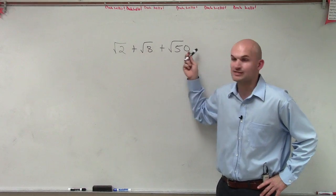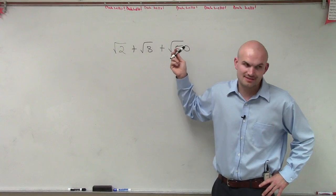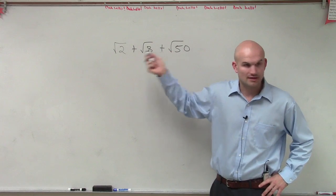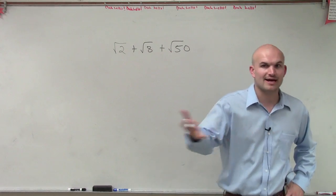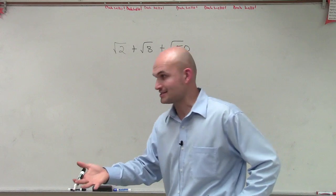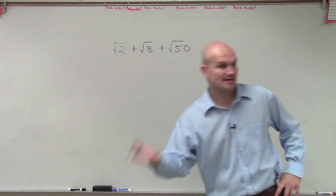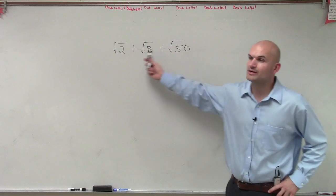So right now I have square root of 2, square root of 8, and square root of 50. I cannot add these. This does not equal the square root of 60. They have to be like terms, just like we add x's and y's. You can only add x's with x's, and y's with y's, x squareds with x squareds. So we can't combine these.